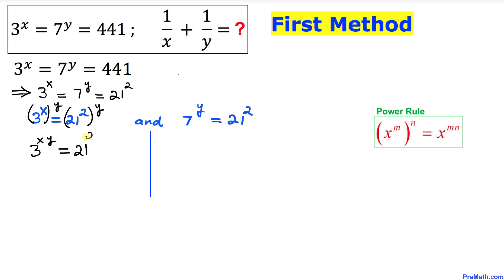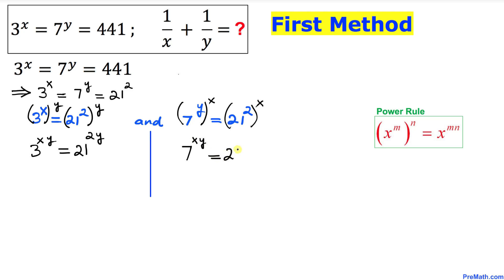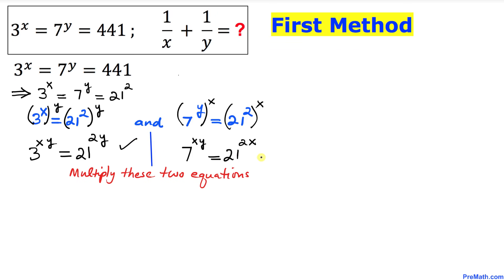So we can write that equation as 3 power xy equals 21 power 2y, by using the power rule. Now let's focus on the second equation and take the power of x on both sides, giving us 7 power xy equals 21 power 2x, by using the same power rule.